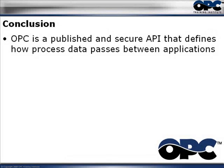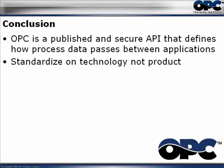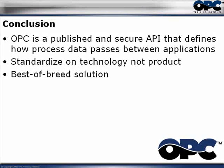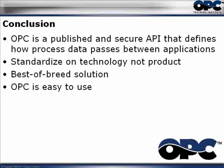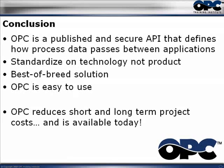OPC is a published and secure API that describes how process data passes between different applications. It enables us to standardize the technology and not a particular product, so you don't have to rely on any specific vendor any longer. You can take a best-of-breed solution — the best HMI, the best PLC, the best historian, advanced process control, ERP, and CMMS applications — and put it all together using OPC to reduce both short-term and long-term costs. It's pretty easy to use, and I highly recommend you take a look at what it can do for you.